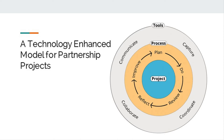The fourth stage is Reflect, where the team review and reflect on the current sprint process. It's really important to stress that they are reflecting on the process and not the product, and the aim of the reflection is to continually improve the process.